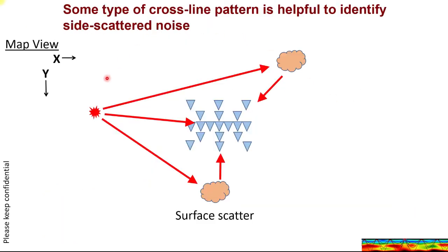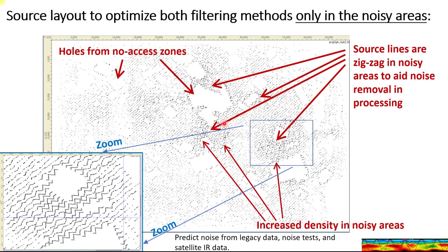Here's the concept: the scattering is coming in from all directions from the source. To resolve this, we need some type of dense spacing in X and Y for the receivers. Even with 100,000 or 500,000 receivers, we still can't place them everywhere, but it gives us more flexibility.